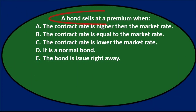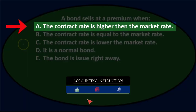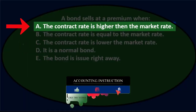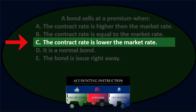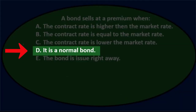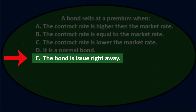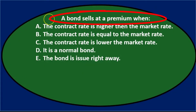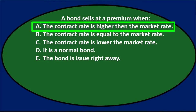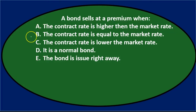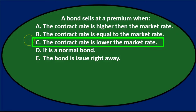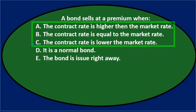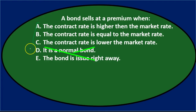Next question: a bond sells at a premium when: a) the contract rate is higher than the market rate, b) the contract rate is equal to the market rate, c) the contract rate is lower than the market rate, d) it is a normal bond, or e) the bond is issued right away. Notice that options a, b, and c are very similar and closely related.